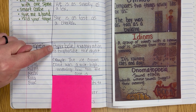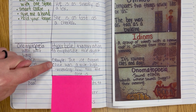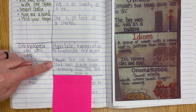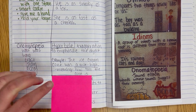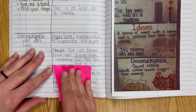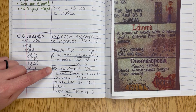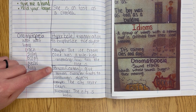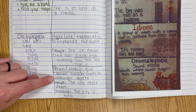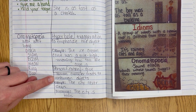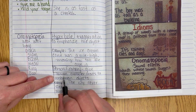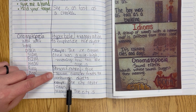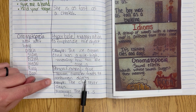So that's hyperbole: an exaggeration, very extreme. The ice cream cone was a mile high, or the bag weighed a ton — which means it would be way too heavy. We're also going to add in today personification. Personification gives human character traits to non-human objects.